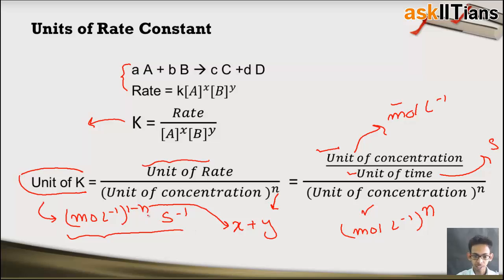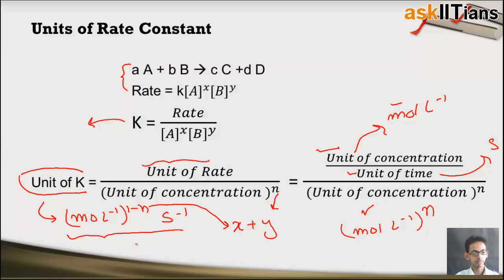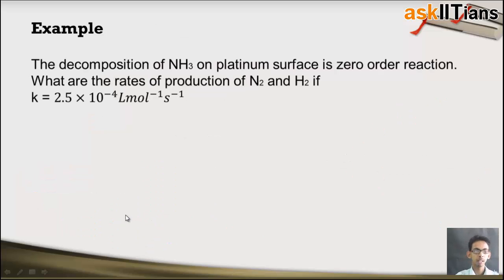If it is a first order reaction, the value of n will be 1. If it is a zero order reaction, n will be 0. For a third order reaction, n will be equal to 3. So n is the order of reaction.